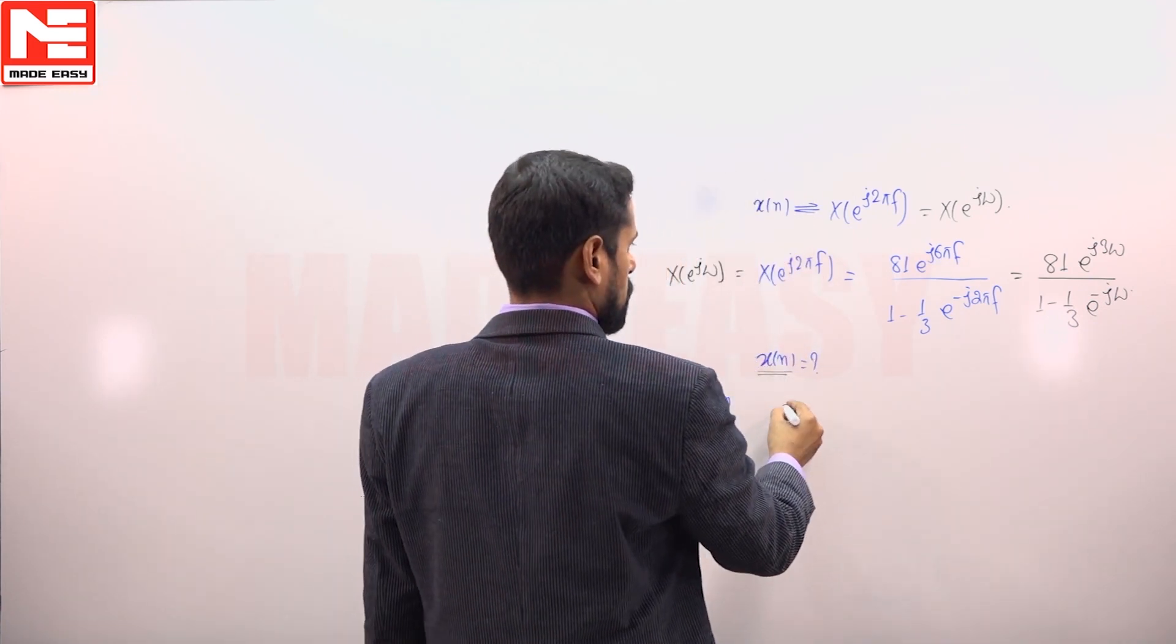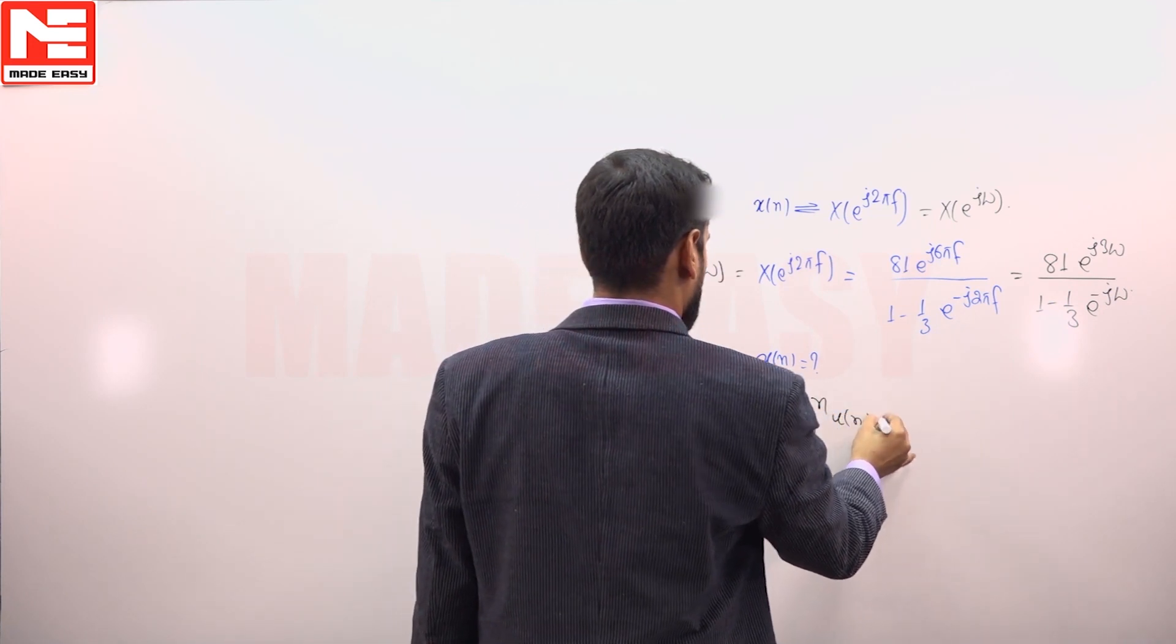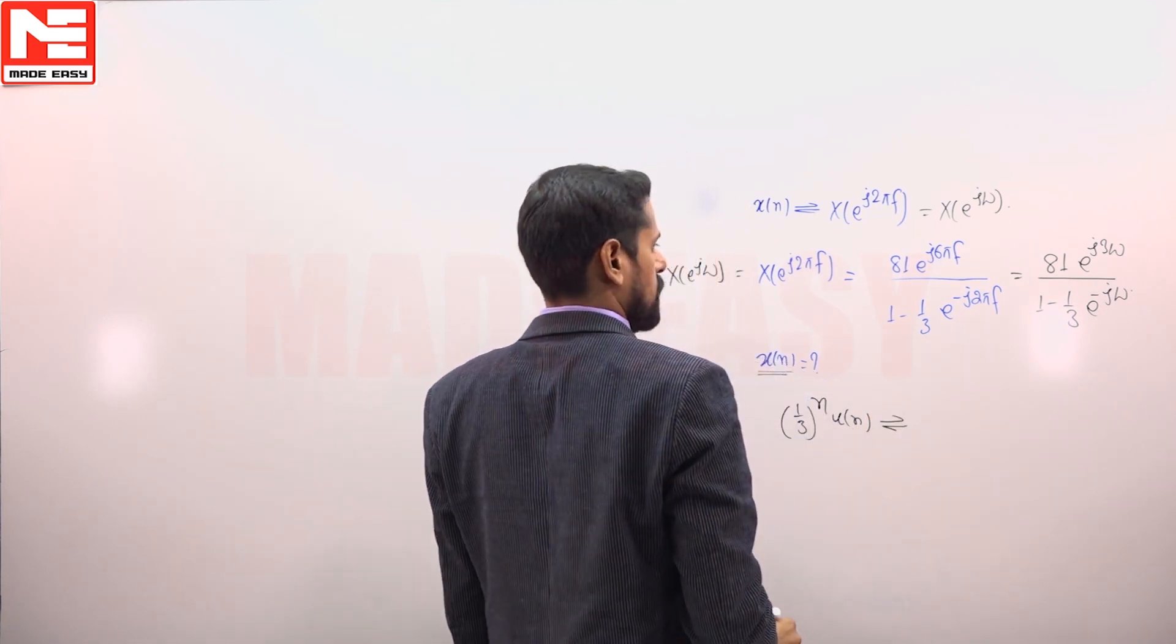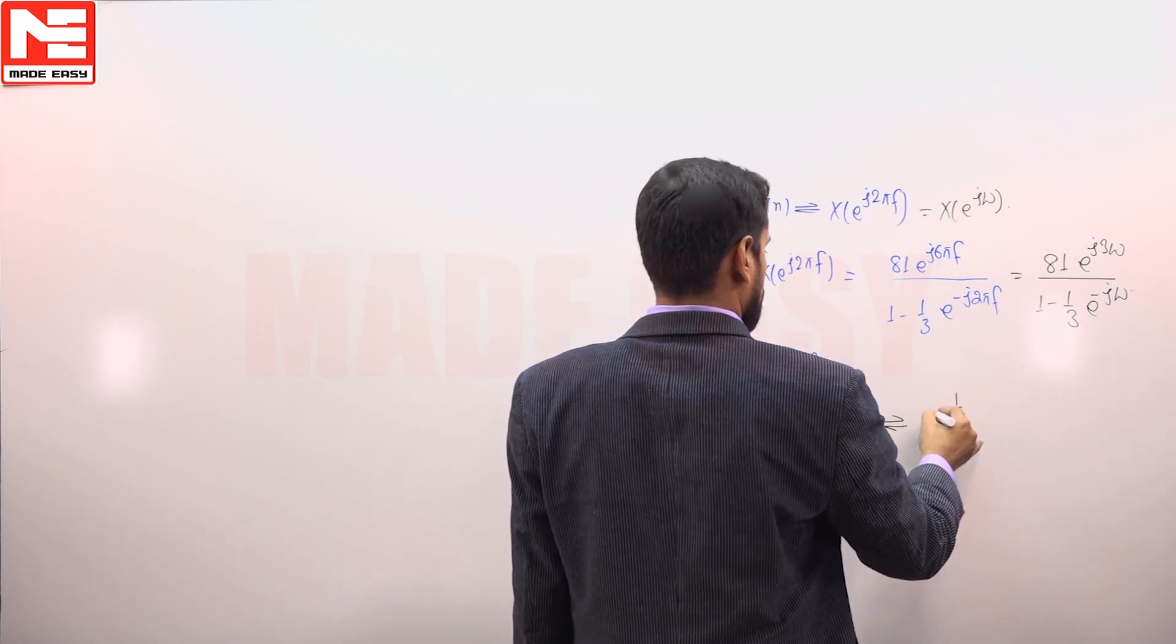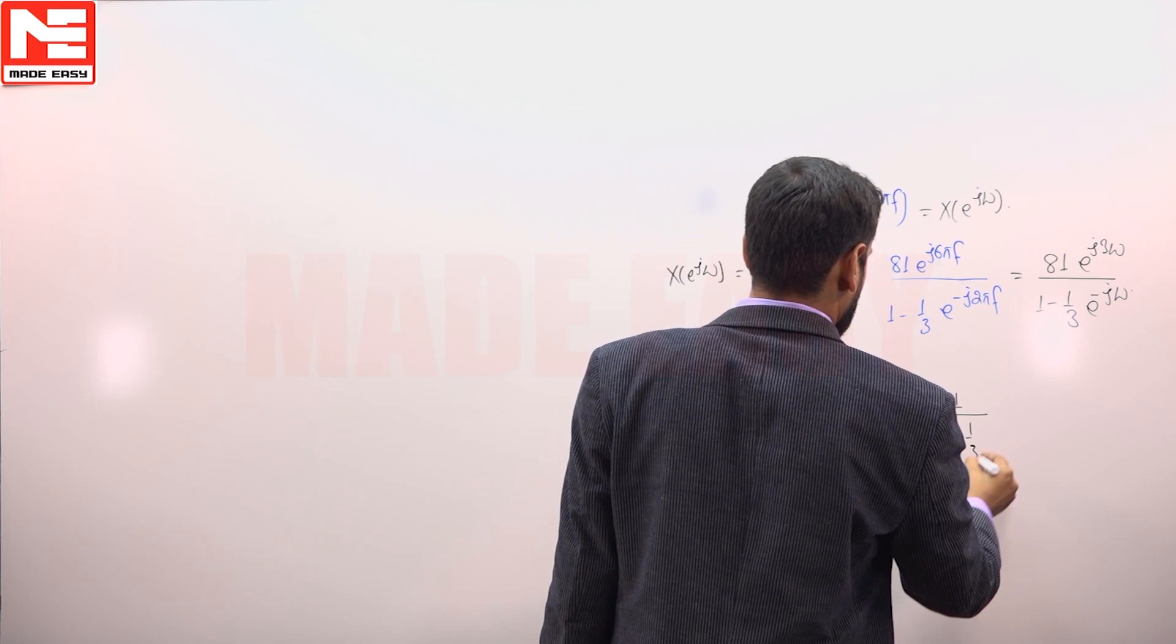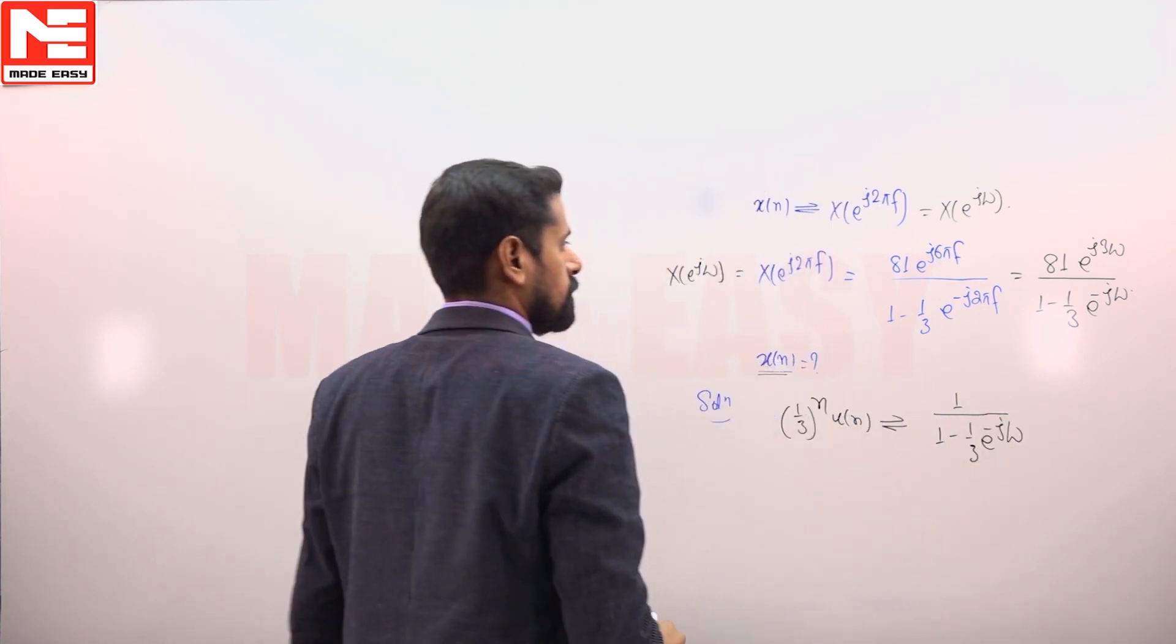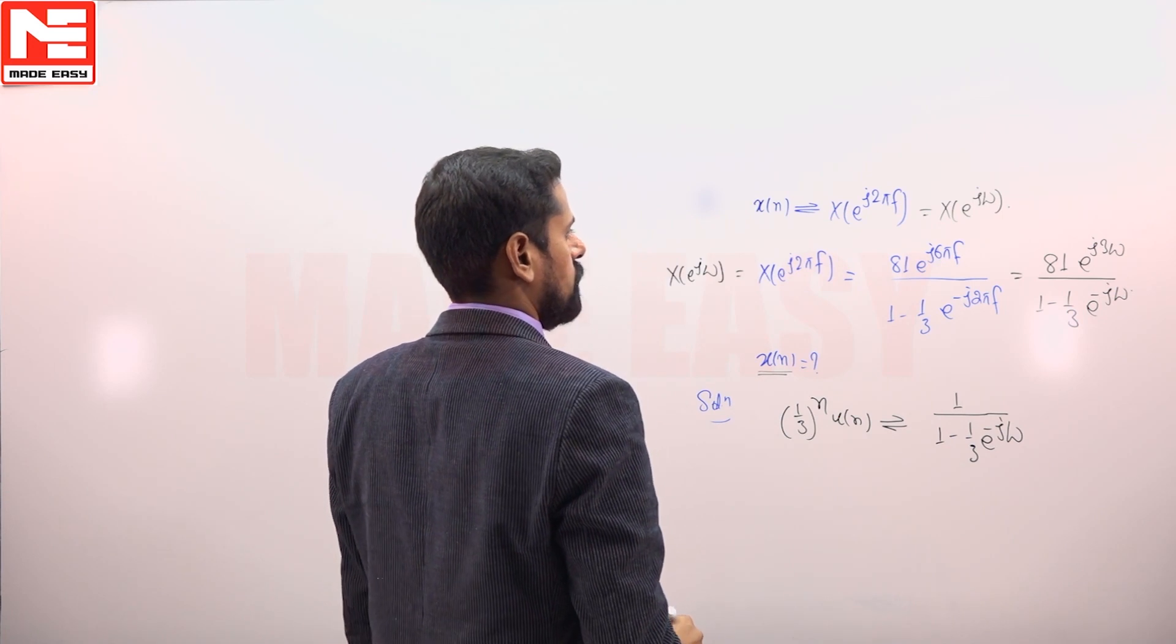If signal is (1/3)^n u(n), for (1/3)^n u(n) discrete time Fourier transform is 1 upon 1 minus 1 by 3 e^(-jω).